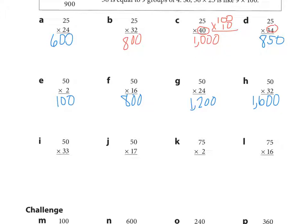I, 50 times 33. What's half of 33? It's not a whole number, right? We have to go to a decimal. Half of 30 is 15. Half of three is one and a half. 15 plus one and a half is 16 and a half. So I take 16 and a half times 100. And what do I get? 1650 is correct. J, 50 times 17. Half of 17 is eight and a half. Eight and a half times 100 is 850.